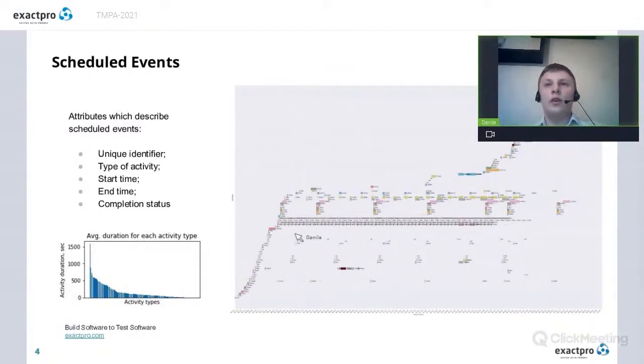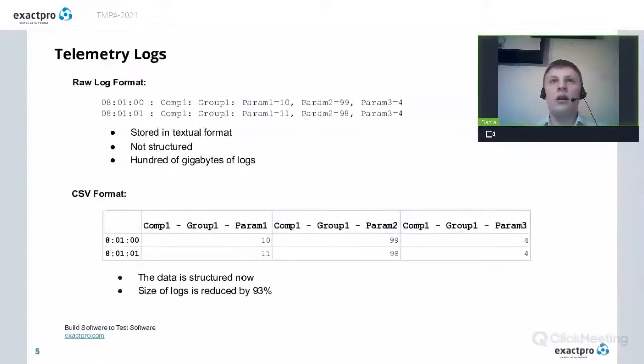Also in this picture we can see an example of what our regular business day looks like. So here on the x-axis we have the whole timeline of our regular business day and on y-axis we have different activities which are executed in our system. As we can see from this picture some of the activities are executed only once a day, some of them are executed several times a day.